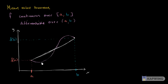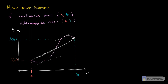And we can see just visually it looks like right over here the slope of the tangent line looks the same as the slope of the secant line. It also looks like the case right over here. And it makes intuitive sense — at some point your instantaneous slope is going to be the same as the average slope. Now how would we write that mathematically?